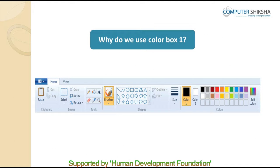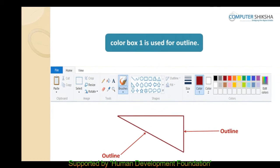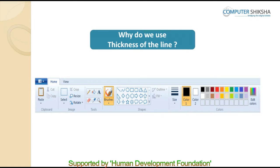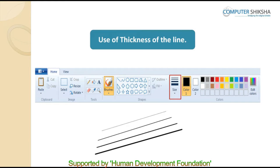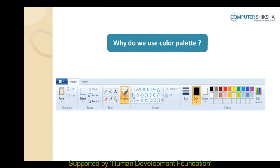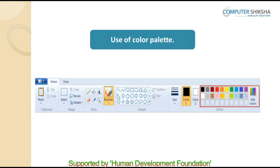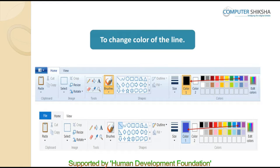Can you tell why we use color box 1? We use color box 1 to change the outline of a drawing. Can you tell why we use thickness of a line? We can increase or decrease the thickness of a line by using this option. Do you all know why we use color palette? All colors are stored in the color palette and according to need, we can choose the desired color and then use it.